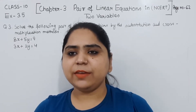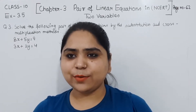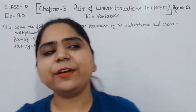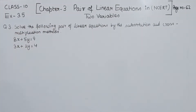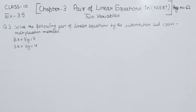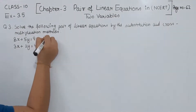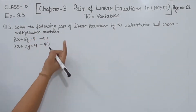Hello everyone, this is Preeti. We have another question of exercise 3.5, page number 63, question number 3: Solve the following pair of linear equations by the substitution and cross multiplication methods. We have two equations — the first one and the second one.